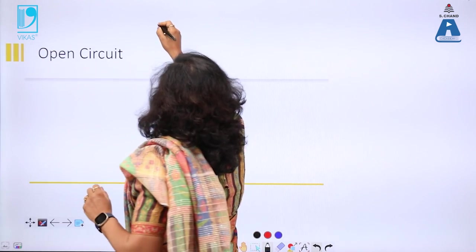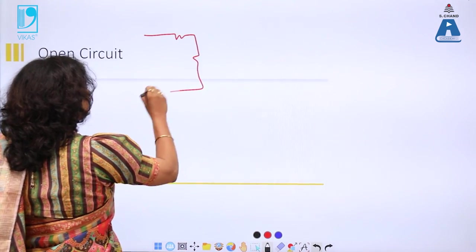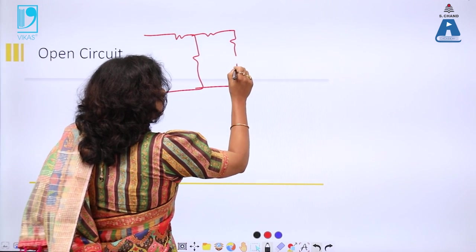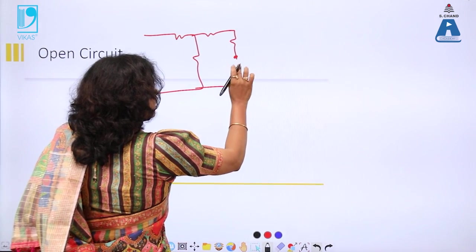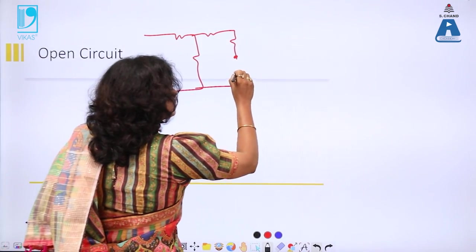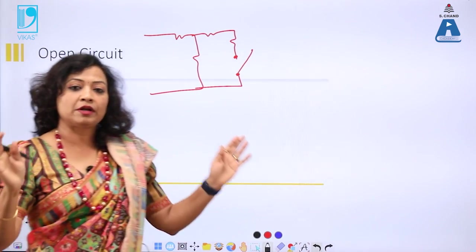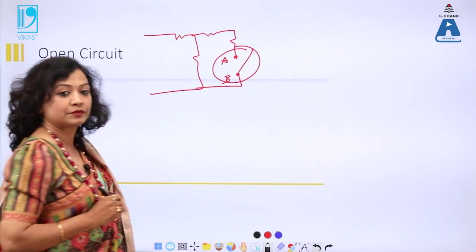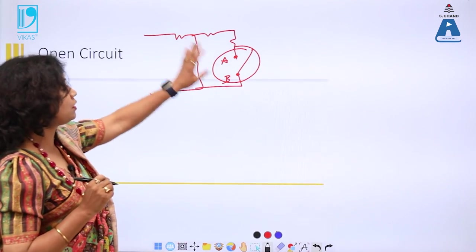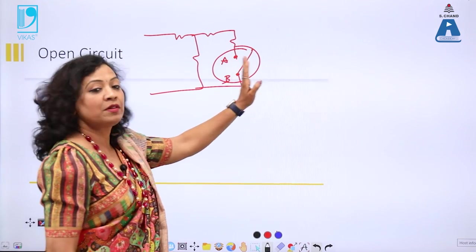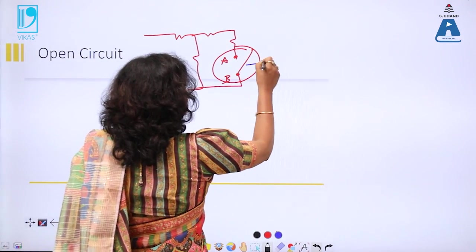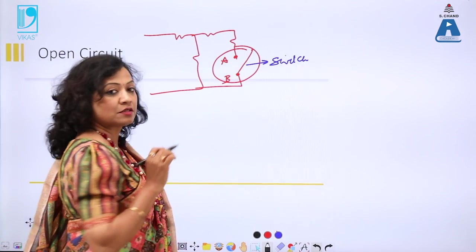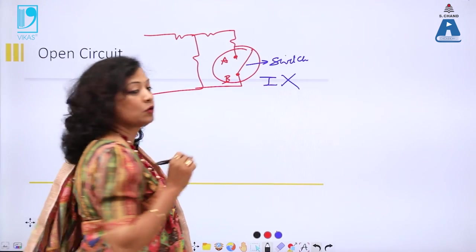For example, consider a circuit with a switch. When the switch is open, the open terminals are A and B. In the open circuit, there will not be any current flowing between A and B. However, there can be a voltage between terminals A and B.